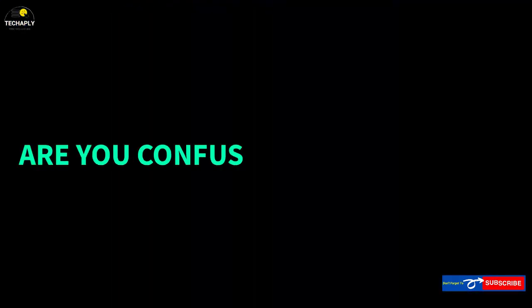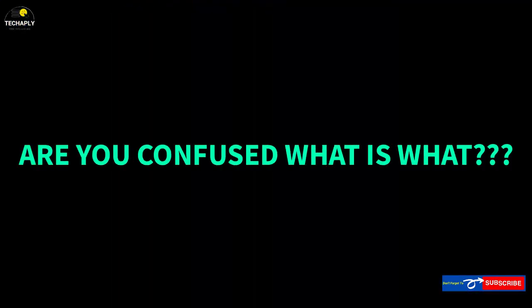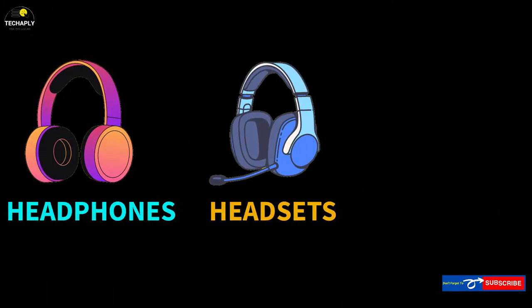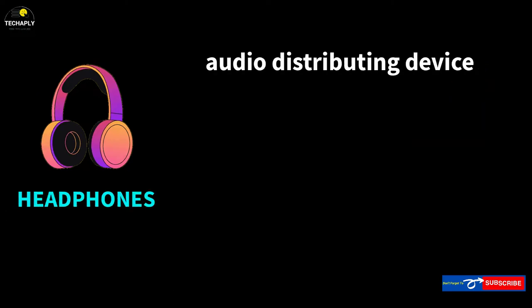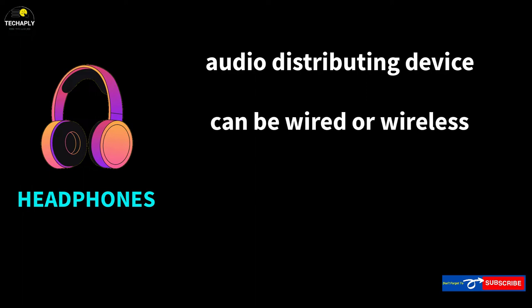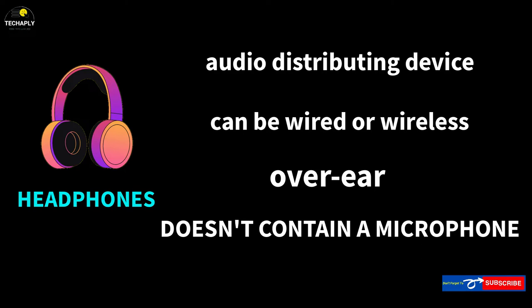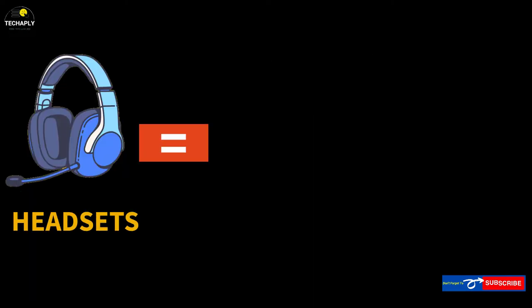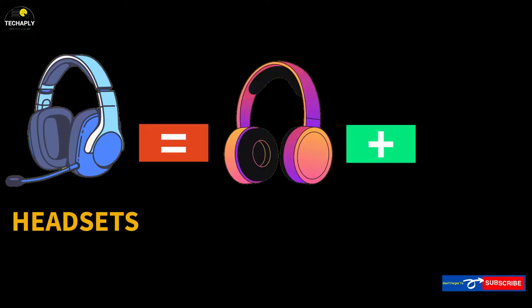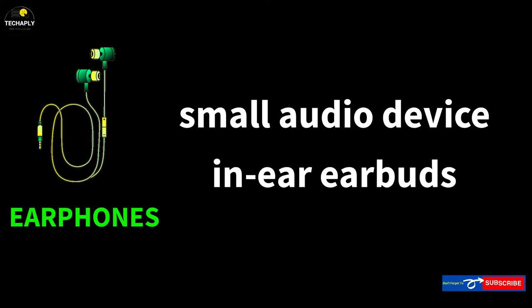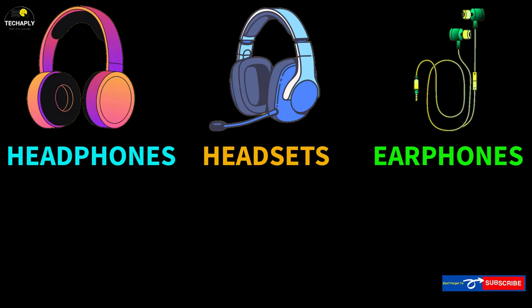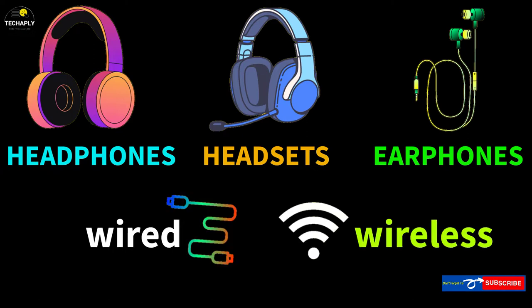Let's test this out. If you're confused between some terms such as headphones, headsets, and earphones, then these will briefly explain themselves. A headphone is a device to distribute audio — it can be wired or wireless, over-ear, and it doesn't contain a microphone. A headset indicates you've got a headphone with an inbuilt microphone. An earphone is a small audio device that allows listening through in-ear earbuds. All of the device names mentioned can use wired or wireless technologies.